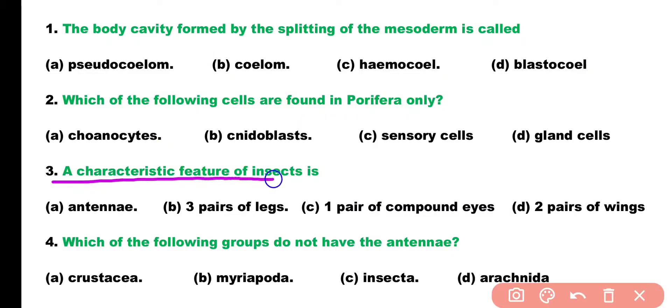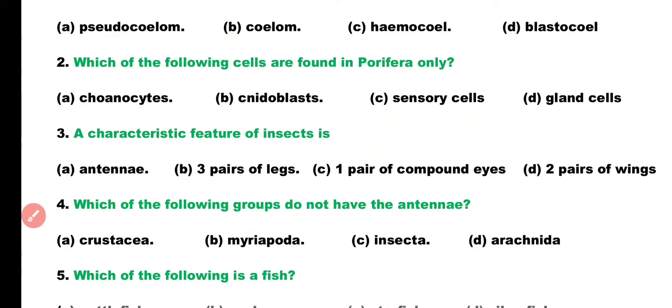Question 3. A characteristic feature of insects is: antenna, 3 pairs of legs, 1 pair of compound eyes, or 2 pairs of wings? Correct answer is Option B. Insects' characteristic feature, if you look at, 3 pairs of legs are found in insects.